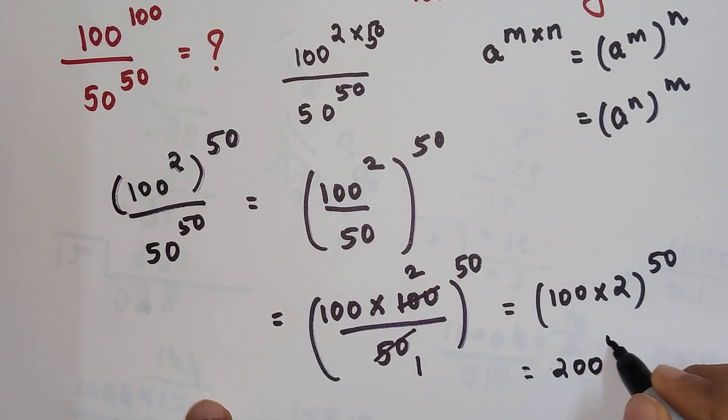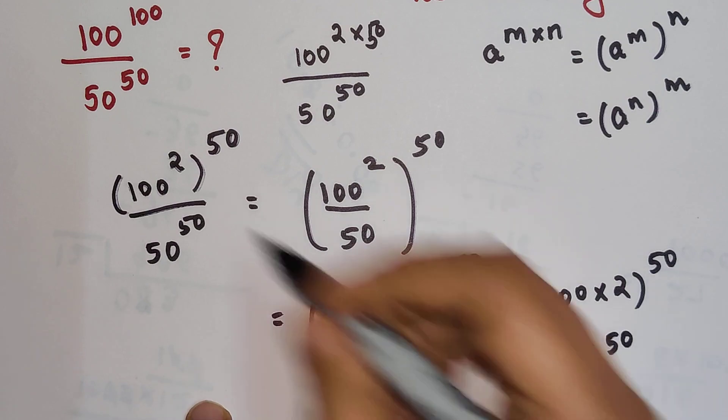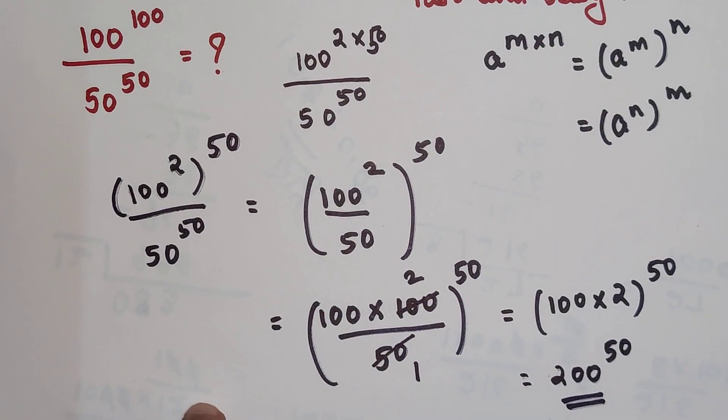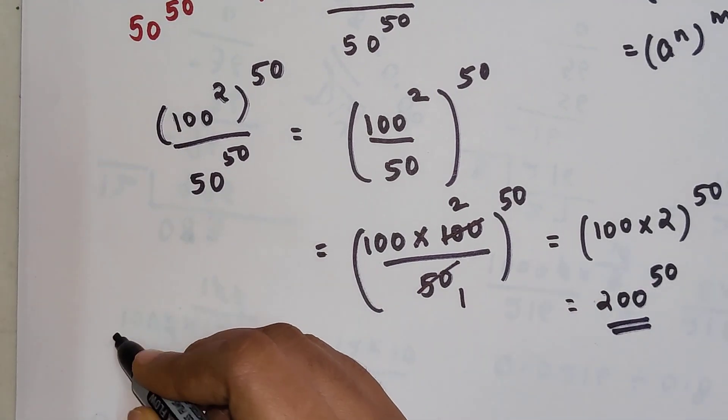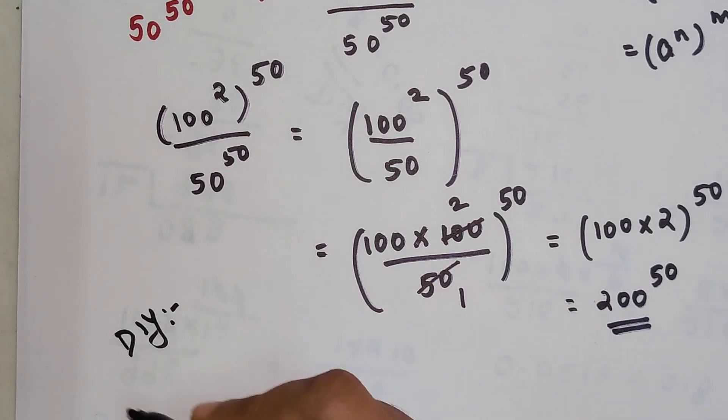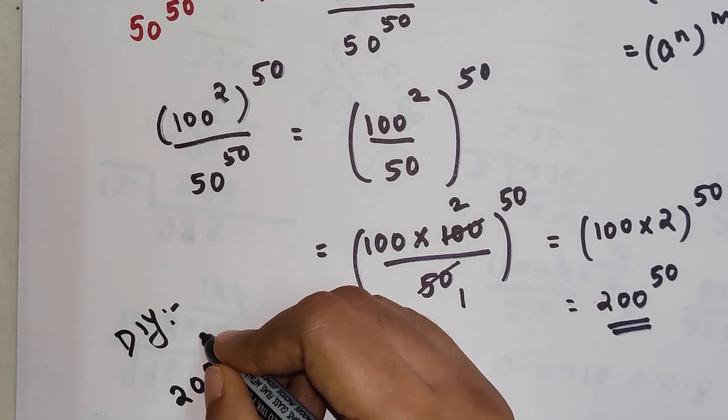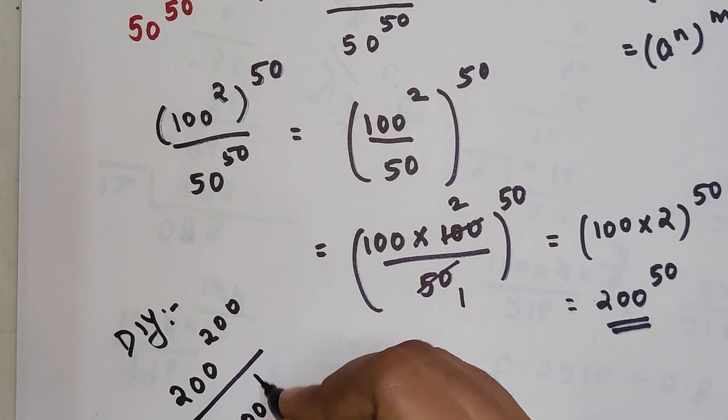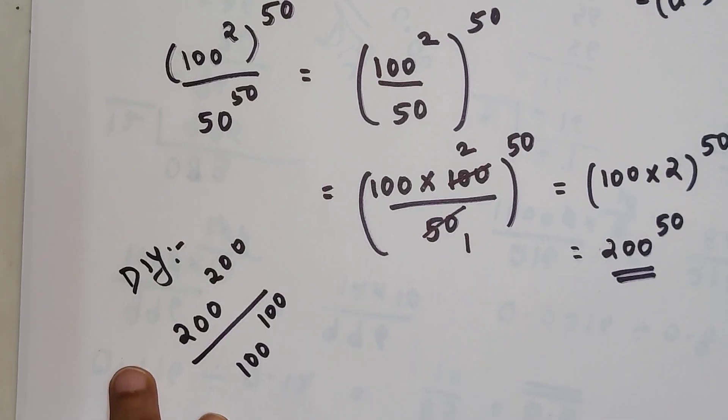200 raised to 50 is my answer for simplification of this particular question. So now time for your DIY: I want you all to tell me what is the simplified form of 200 raised to 200 divided by 100 raised to 100.